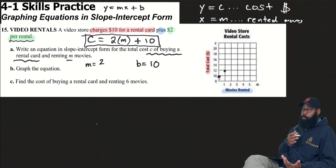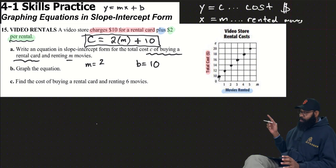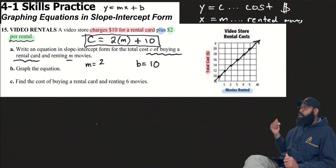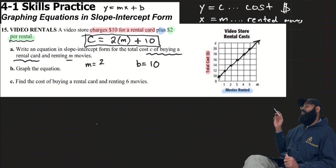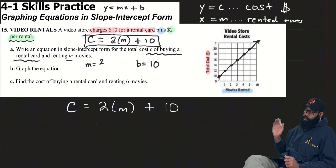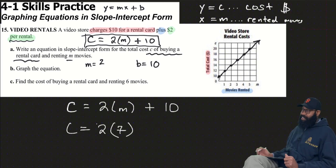Now graph it using y equals mx plus b. C equals 2M plus 10. My slope is 2 and my y-intercept is 10, so I plot my starting point on the y-axis at 10. The y-axis is scaled by 2, so up 2 and right 1 looks like up 1 over 1 on the graph, but you're really going up 2 because each unit on the y-axis is 2.